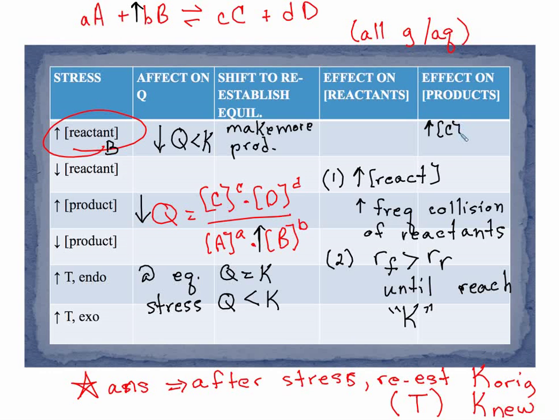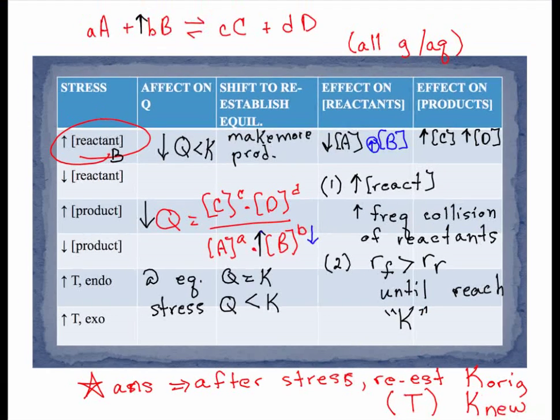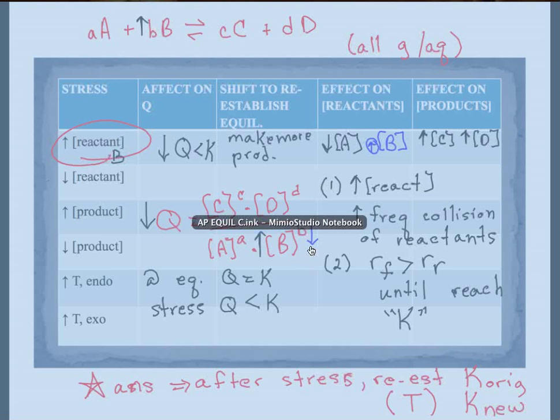The only way we can make more product is if we would increase our concentration of C, we would increase our concentration of D. The only way to make more product, which if the forward rate is greater than the reverse rate we're going to make more product, is to consume reactant. So we're going to decrease the concentration of A. Now B is a little tricky because what happened here is B increased initially to reestablish equilibrium. B would decrease as it's consumed, but for B we would actually have a net increase, small net increase in B. It starts with a big increase, that's our stress. As it reestablishes equilibrium it decreases, but we do end up with a net slight increase.